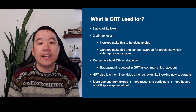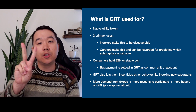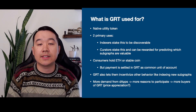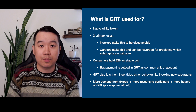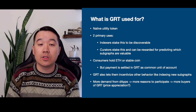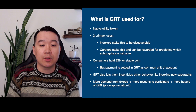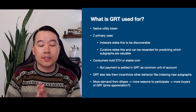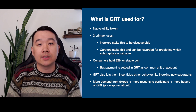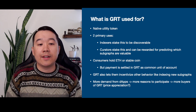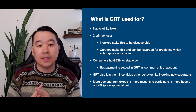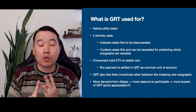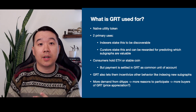So what is GRT used for? It's a native utility token with two primary use cases. First, indexers must stake GRT to be discoverable. Second, curators stake GRT and can be rewarded for predicting which subgraphs are valuable. Consumers are encouraged to hold ETH or a stablecoin, but payment is ultimately settled in GRT as the common unit of account. GRT also incentivizes behavior like indexing new subgraphs. If there's more demand from dApps for the Graph's service, there are more reasons for people to participate and more buyers of GRT, which can potentially lead to price appreciation.